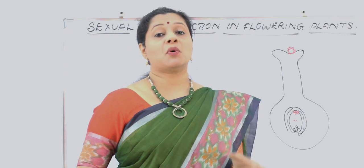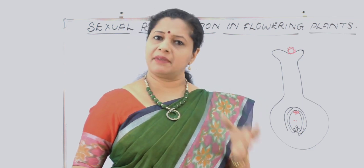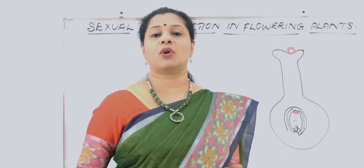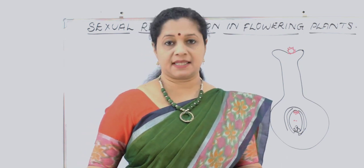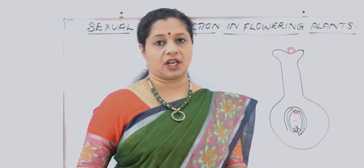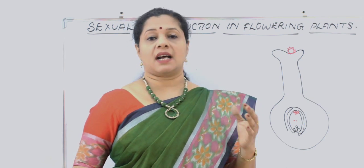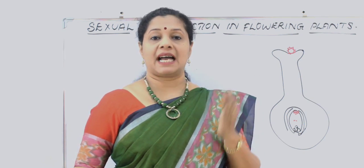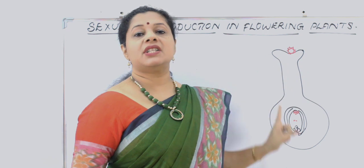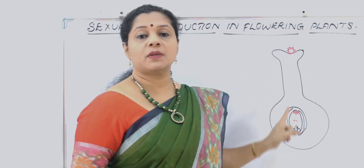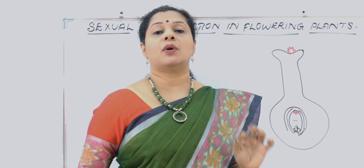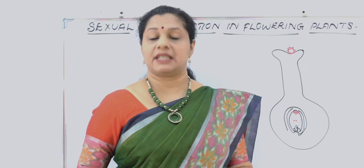So what is pollen-pistil interaction? From the heading itself it is evident — it is the interaction between the pollen and the pistil that happens immediately after pollination. All the events starting from the landing of pollen on a stigma till the pollen tube grows and enters into the ovule are called pollen-pistil interaction.